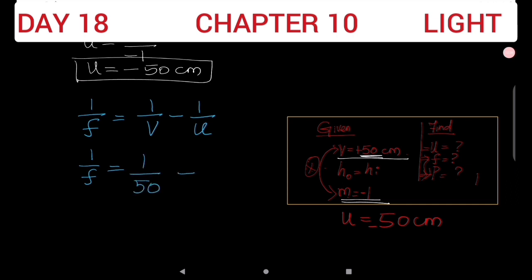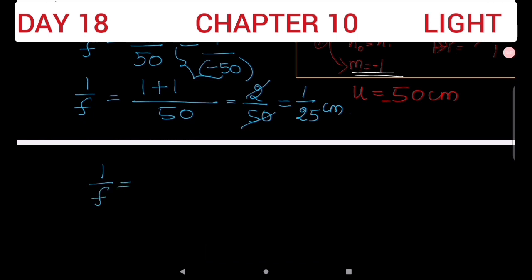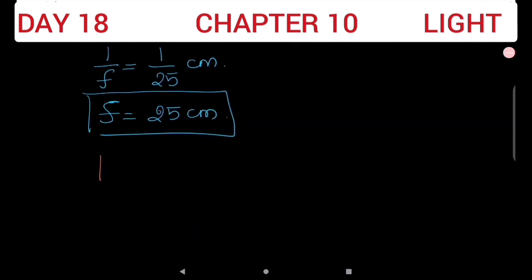1 by F is equal to 1 by V minus 1 by U. Substituting values: 1 by F equals 1 by 50 minus 1 by minus 50, which equals 1 by 50 plus 1 by 50. This equals 2 by 50, which simplifies to 1 by 25. So F is equal to 25 centimeters.